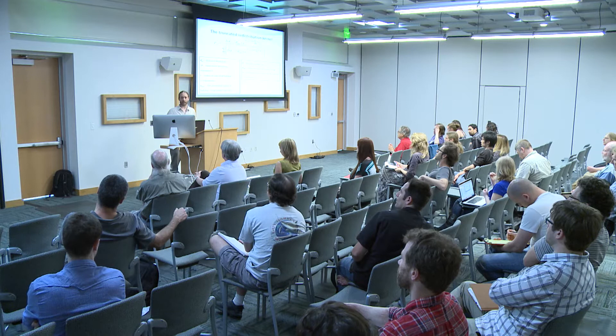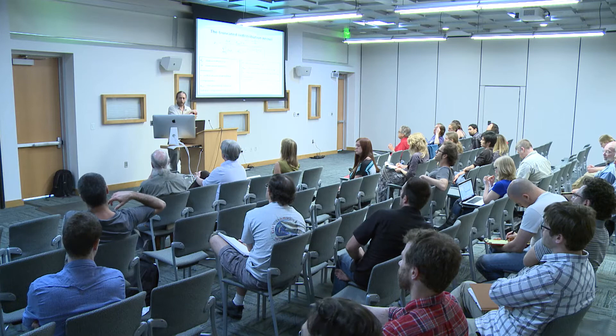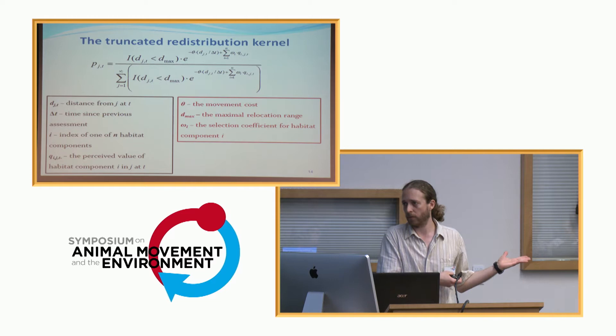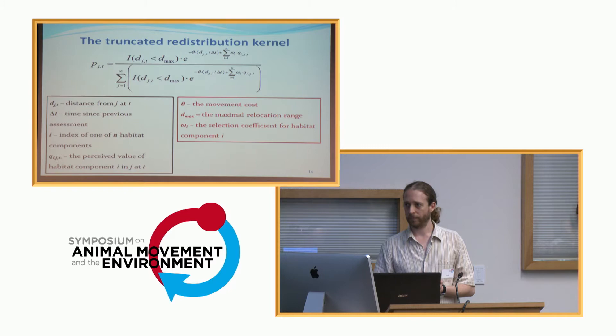Q&A: The redistribution kernel is recalculated at each position along the trajectory, so different kernels arise for different locations based on habitat components and what the animal knows. Temporal dynamics in the non-cognitive movement kernel can also be incorporated. If other sensors are available — stomach content, heart rate, temperature — these can be included in the movement probability at each step.